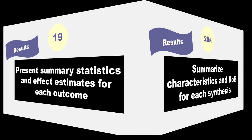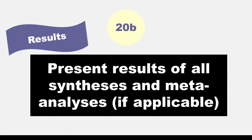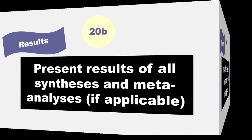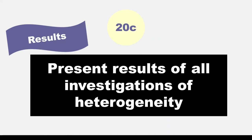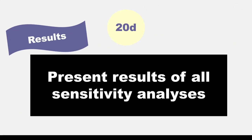In item 20A, authors are asked to, for each synthesis, briefly summarize the characteristics and risk of bias among contributing studies. 20B, present results of all statistical synthesis conducted. If meta-analysis was performed, present for each the summary estimate and its precision and measures of statistical heterogeneity. If comparing groups, describe the direction of the effect. Item 20C, present results of all investigations of possible causes of heterogeneity among study results. In item 20D, authors are asked to present results of all sensitivity analyses conducted to assess the robustness of the synthesized results.